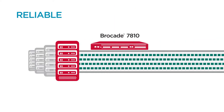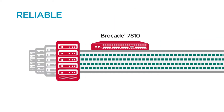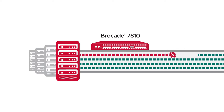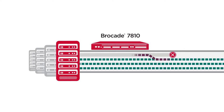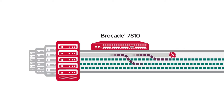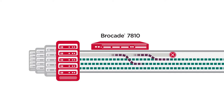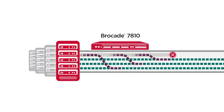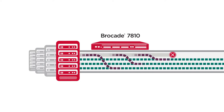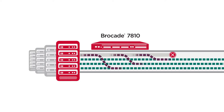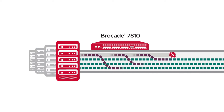The Brocade 7810 handles WAN disruptions automatically by switching disrupted traffic to a good link and rebalancing flows to maintain bandwidth, thus avoiding outages and resyncs.